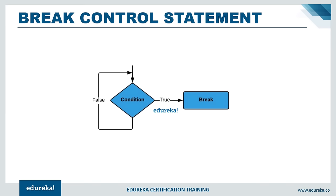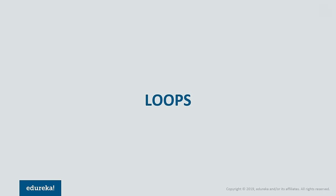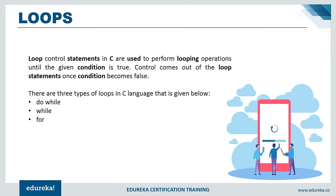Loop control statements are used to perform looping operations until a given condition is true — once false, control exits the loop. There are three types of loops in C: do-while, while, and for loop. Loops allow you to execute a particular code segment a repeated number of times by specifying a condition, such as executing a block exactly five times.